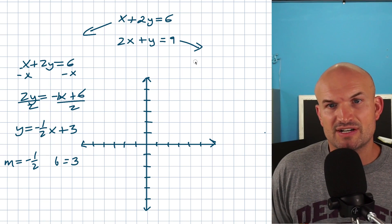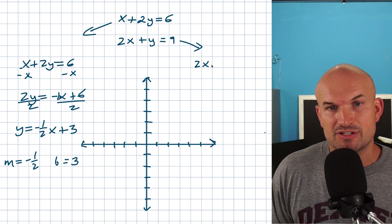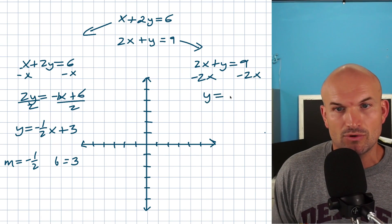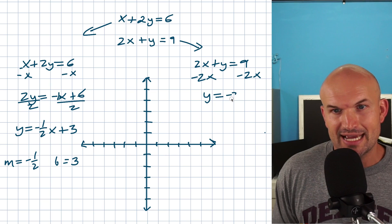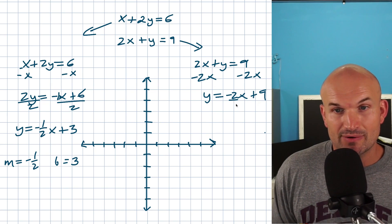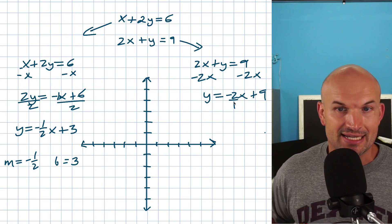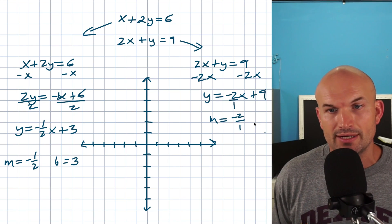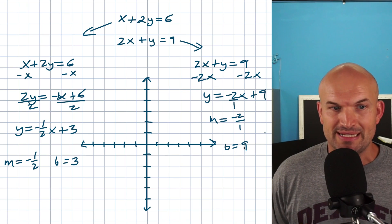For the second equation, 2x plus y equals 9, the only step needed is to subtract 2x from both sides, giving y equals negative 2x plus 9. I can rewrite the slope as negative 2 over 1, so slope is negative 2 over 1 and the y-intercept is 9.